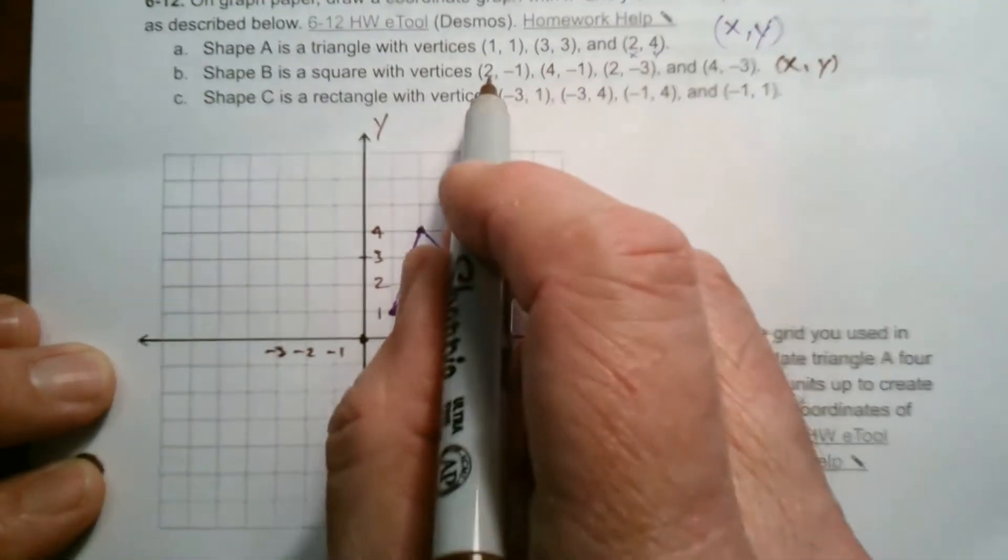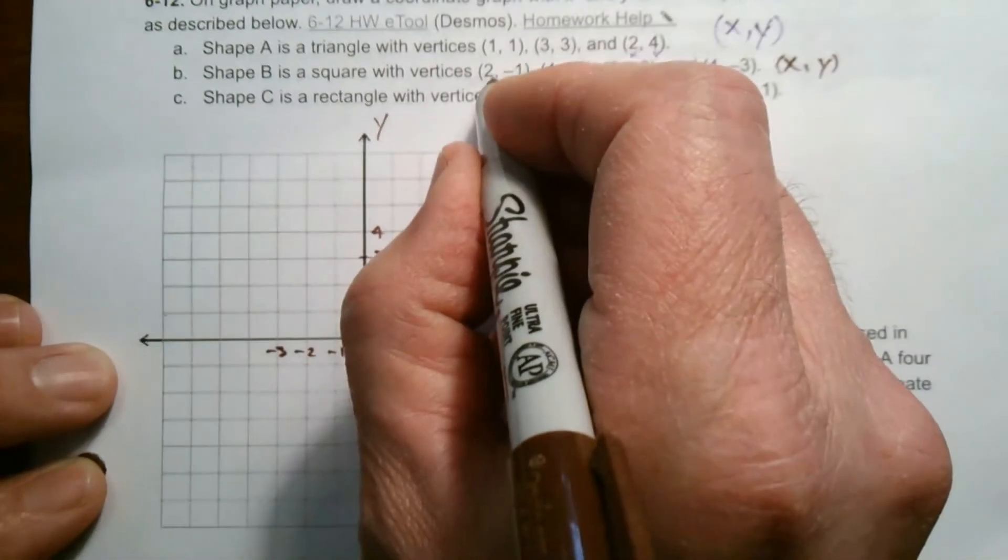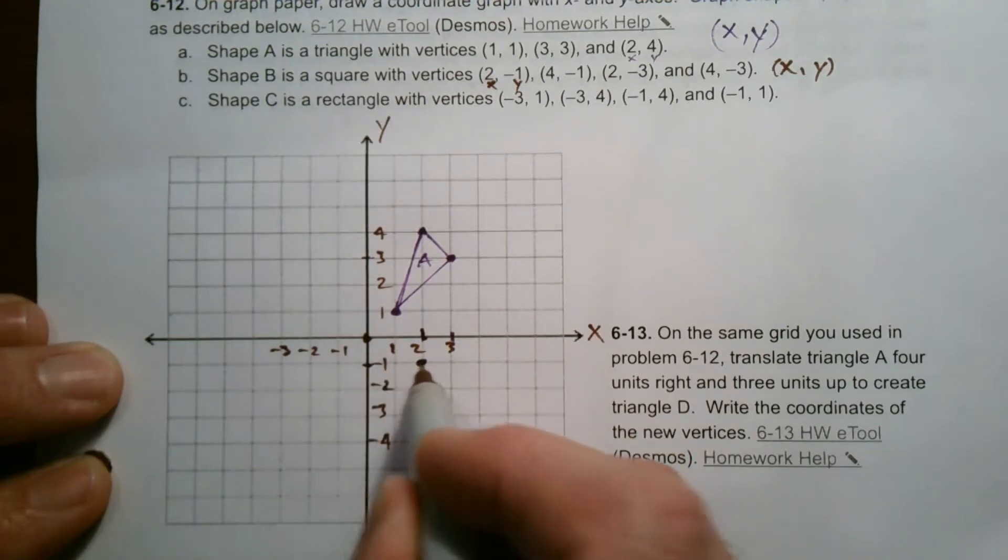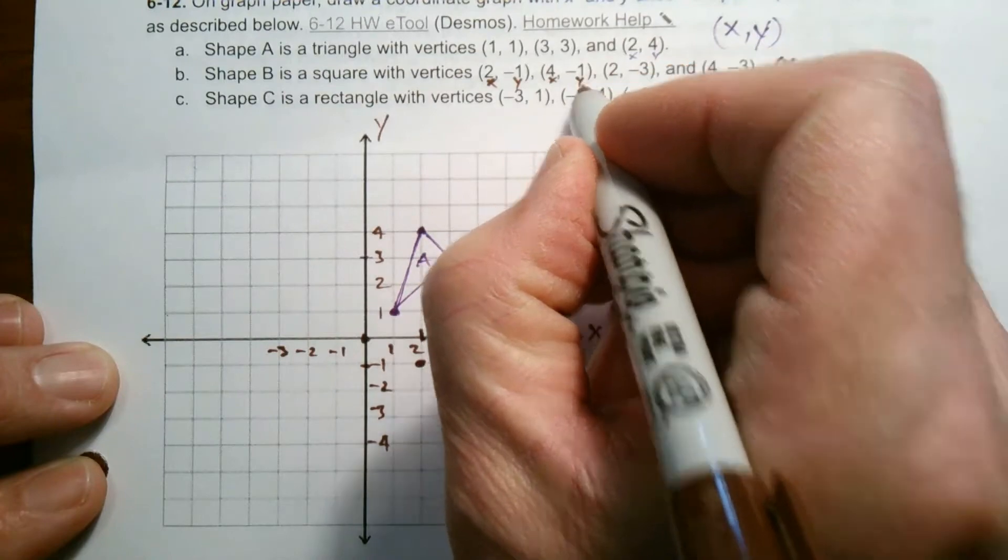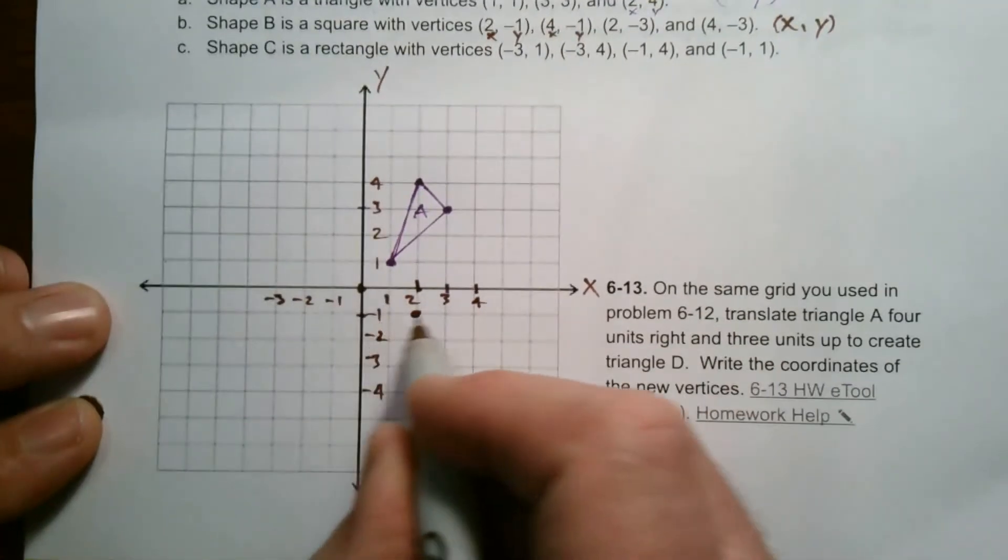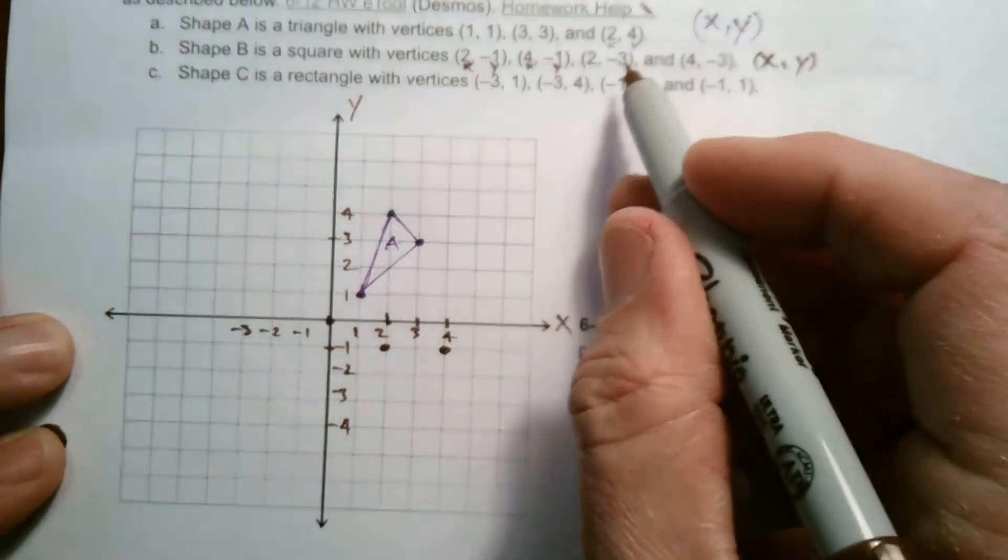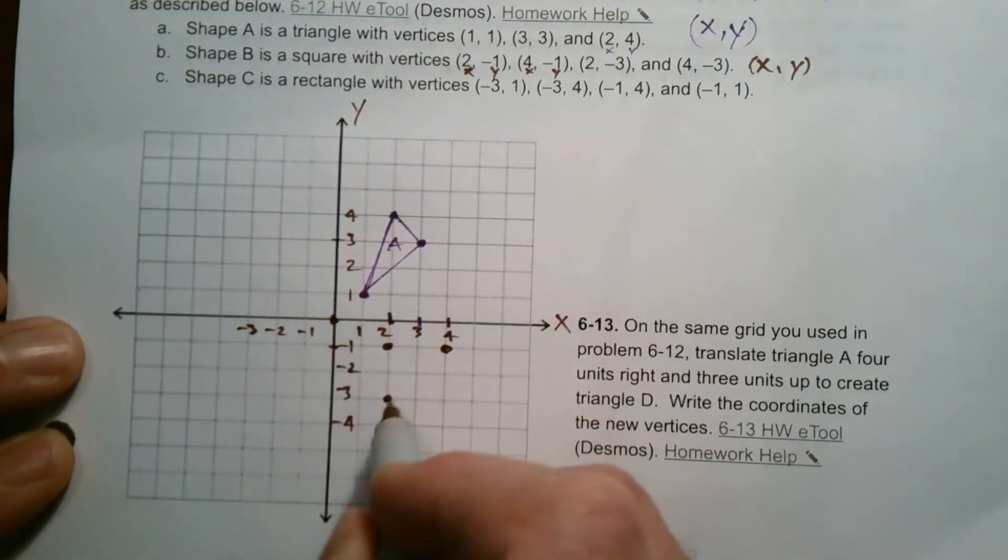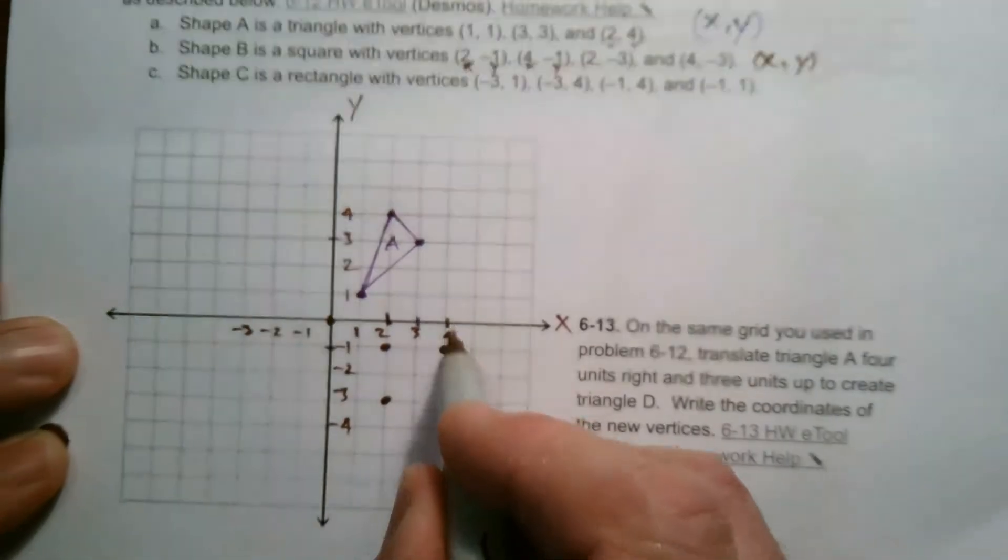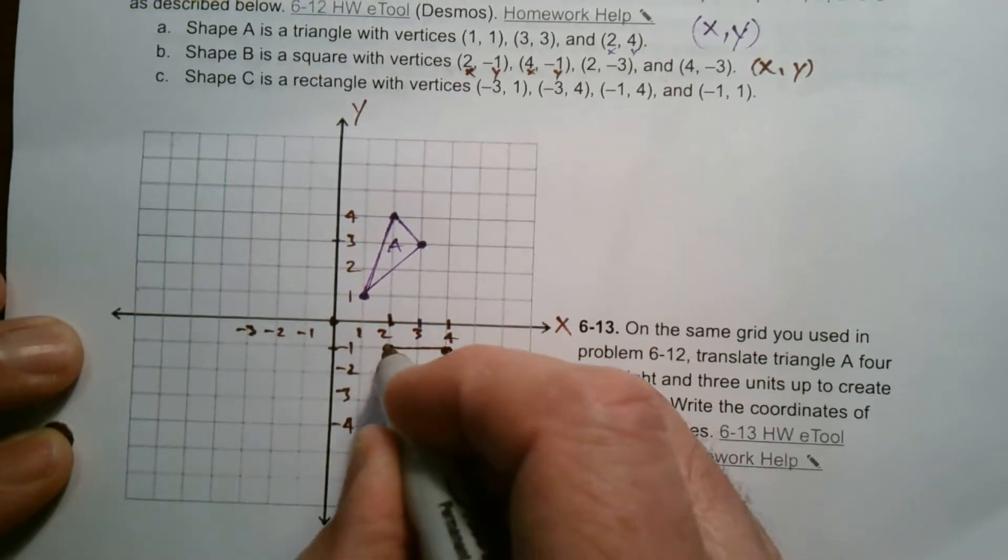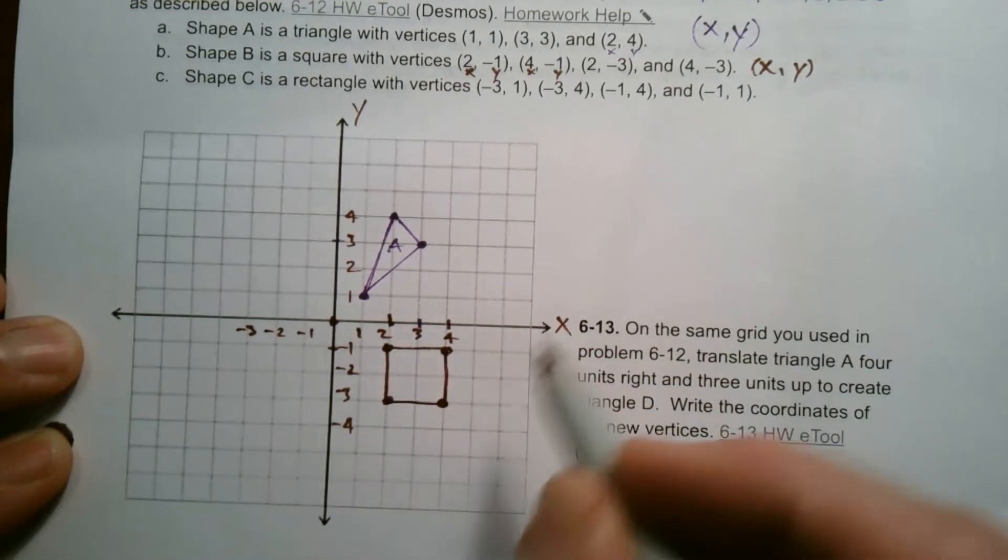So for this one, two, one, two, negative one, right? The x is two, the y is negative one. So at two for the x, negative one for the y is right there. Four is the x, negative one is the y. So four on the x is here, and negative one on the y is there. The next one is two negative three. So two on the x, negative three on the y. So again, two negative three. And then the last one, four negative three. So that's right there. This is where x is four, and y is negative three, and that meets there. So that is my shape.